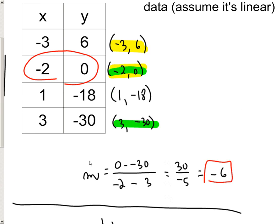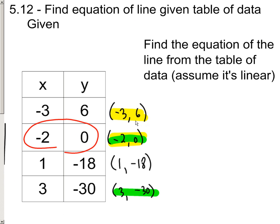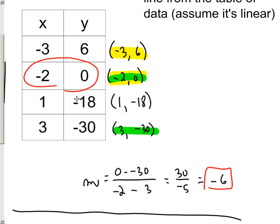So just to recap, when you're given an XY table, it's basically you're given a bunch of ordered pairs. You don't need to use them all. They're just trying to overwhelm you with information. Choose two of the points. It doesn't matter which two.